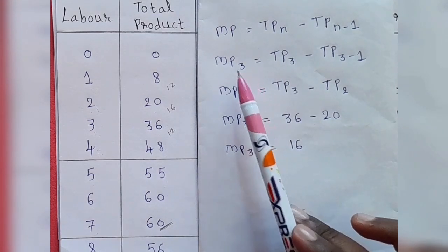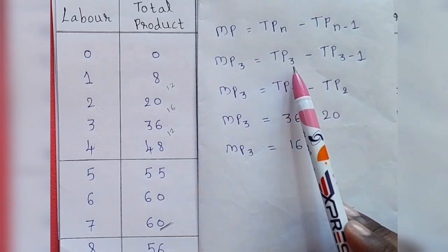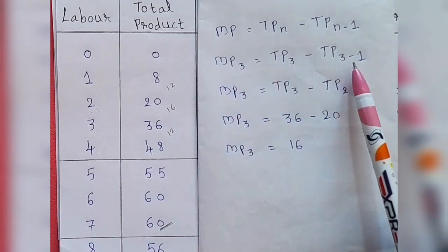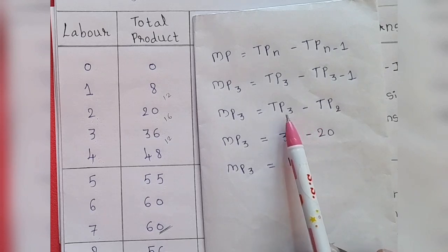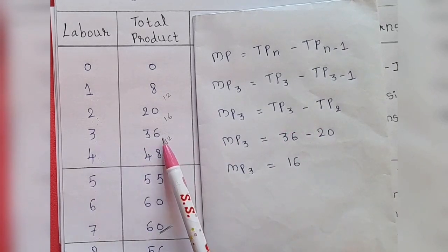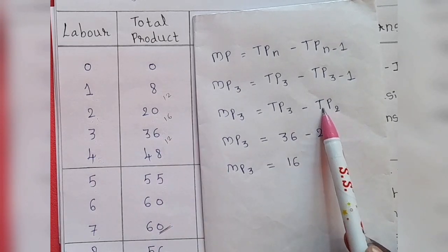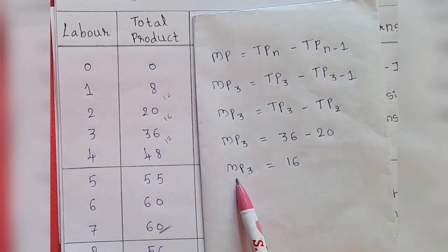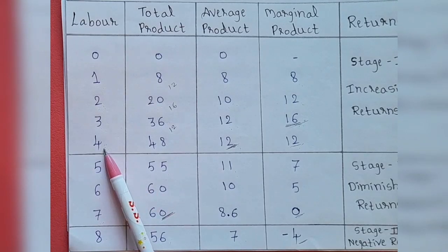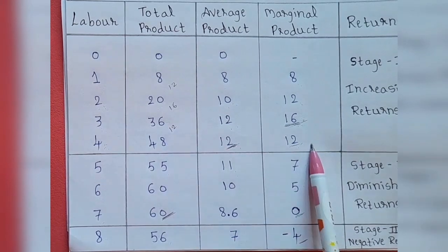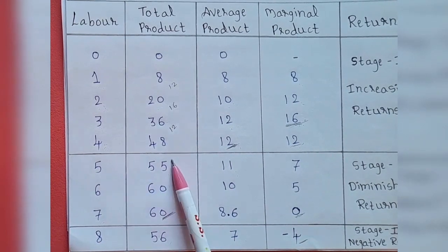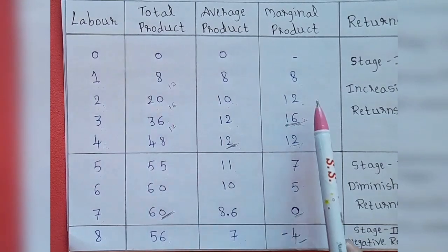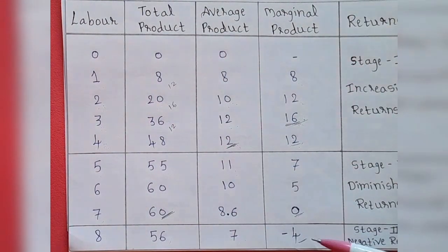For example, to find the marginal product of the third labour, it is TPn minus TPn-1, so 3 minus 1 equals 2. When labour is 3 units, total product is 36 units. When labour is 2 units, total product is 20 units. So 36 minus 20 equals 16 units — the marginal product of the third labour is 16 units. Fourth labour marginal product: 48 minus 36 equals 12 units. Fifth labour: 55 minus 48 equals 7 units. Second labour: 20 minus 8 equals 12 units.